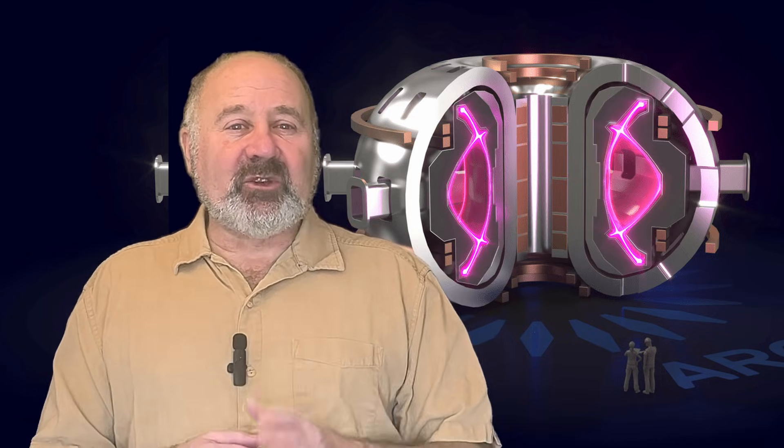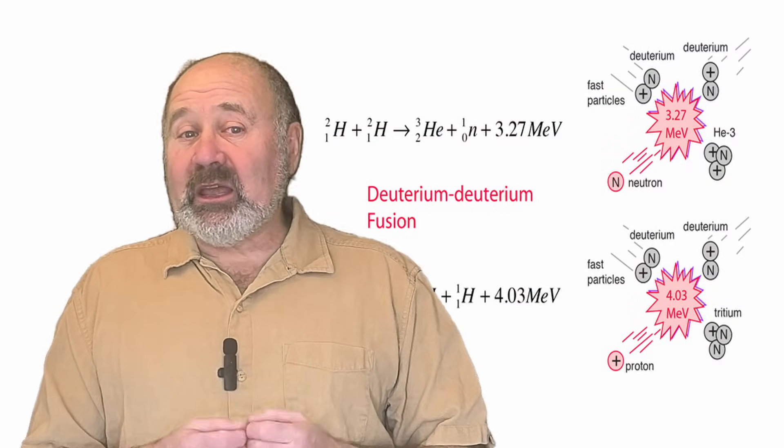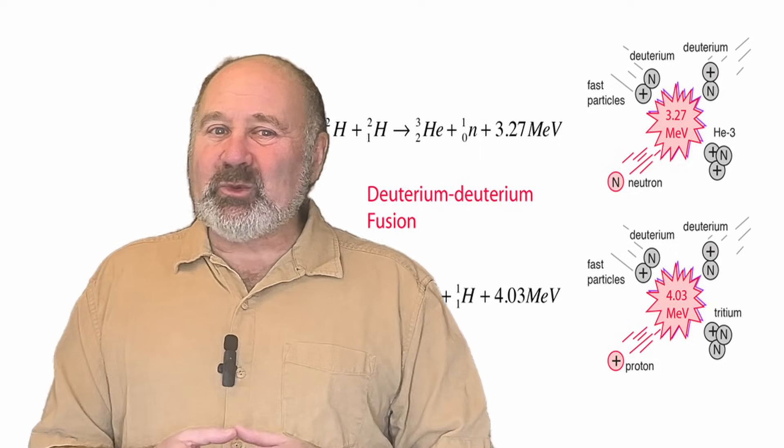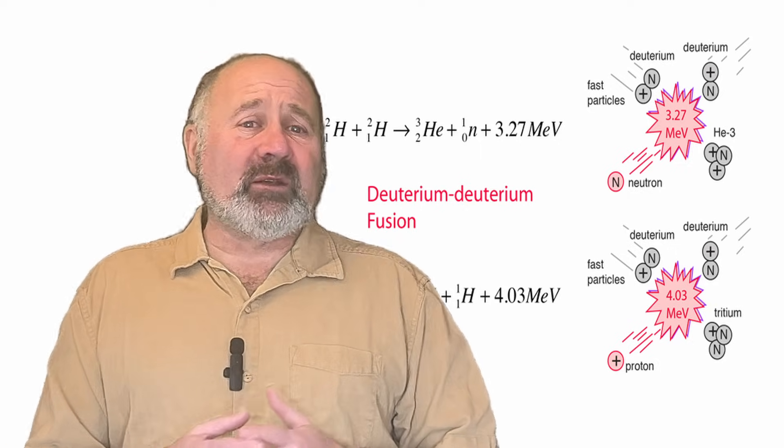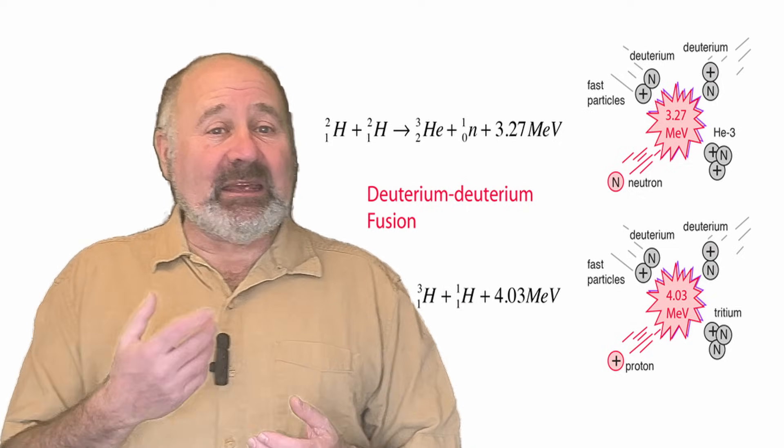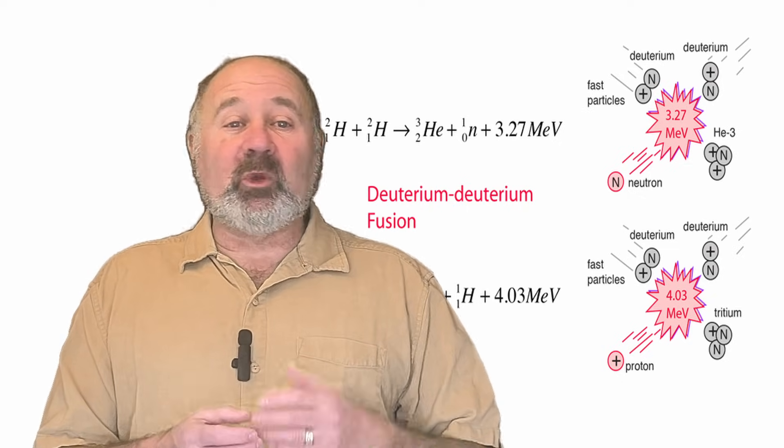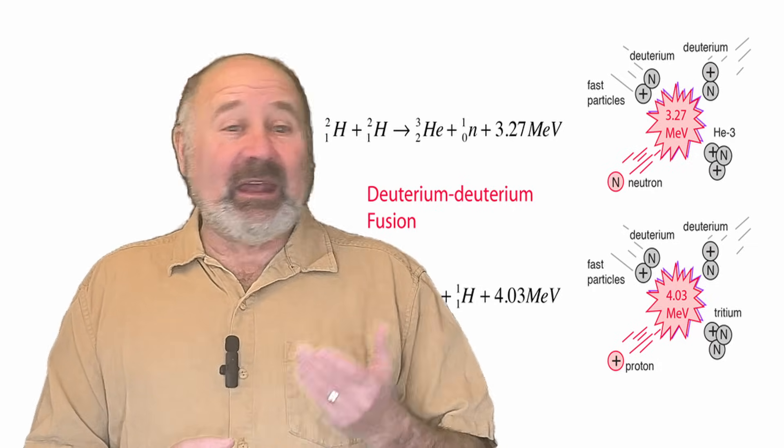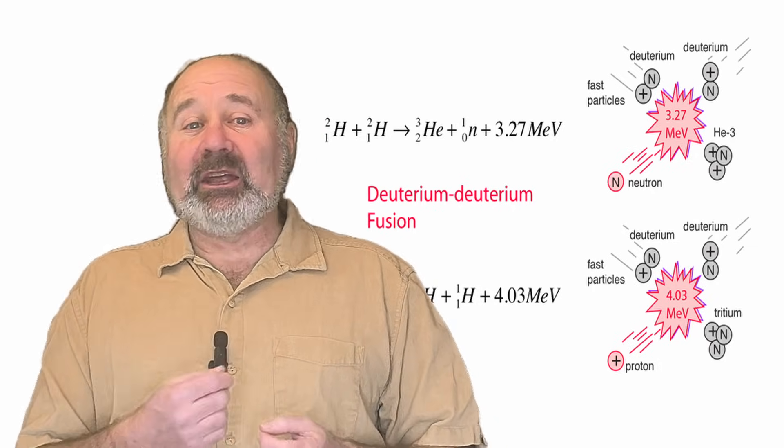The second reaction is to fuse two deuterium nuclei together in a DD reaction. But unfortunately, this reaction only emits about 20% of the energy of the DT reaction. Half of the time, you get a neutron and helium-3, and the neutron will escape the magnetic fields, and the energy will be lost. And half the time, you get a proton and tritium.